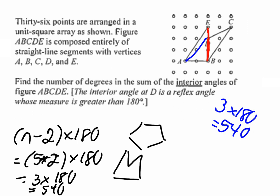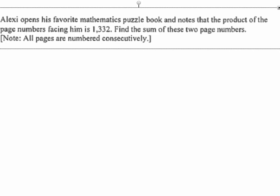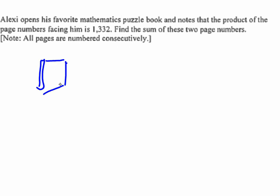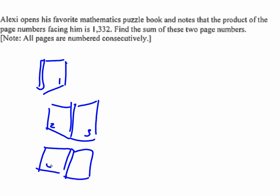This one again stumped a few of you because you weren't quite sure what it was asking. But I think a lot of you assumed that page 1, so if this is my book, page 1 is here, then when I open that book my next pages are 2 and 3, and then my next pages would be 4 and 5 and so on. So what you have to basically do is find two numbers that are going to be multiplying to 1,332.